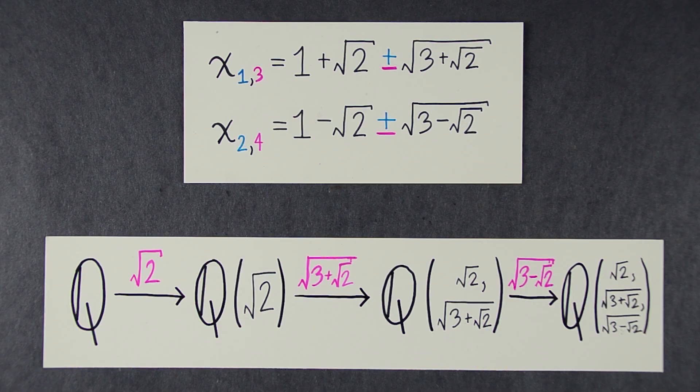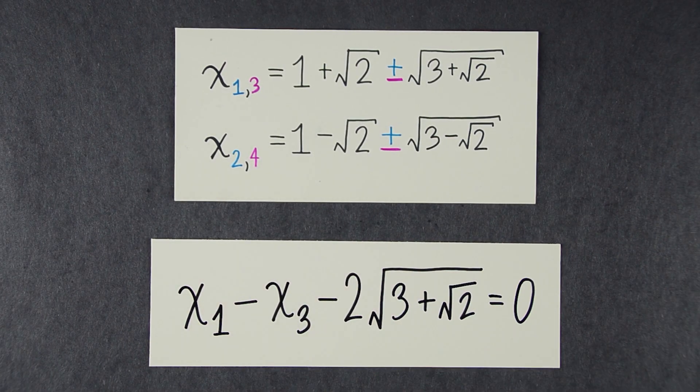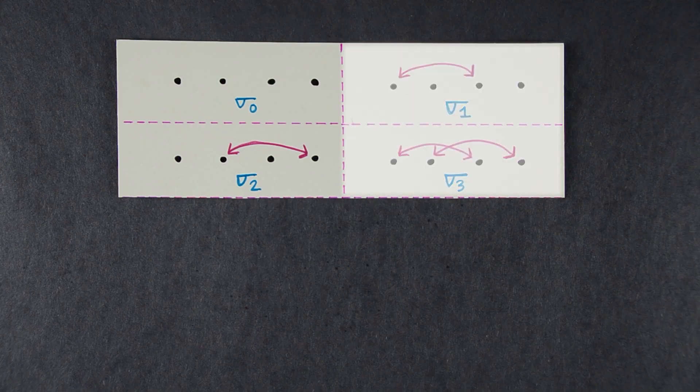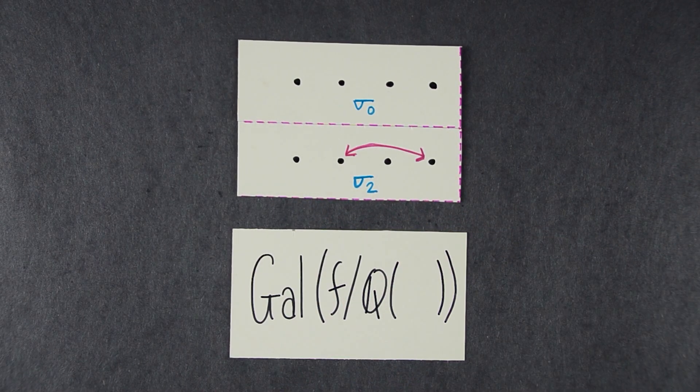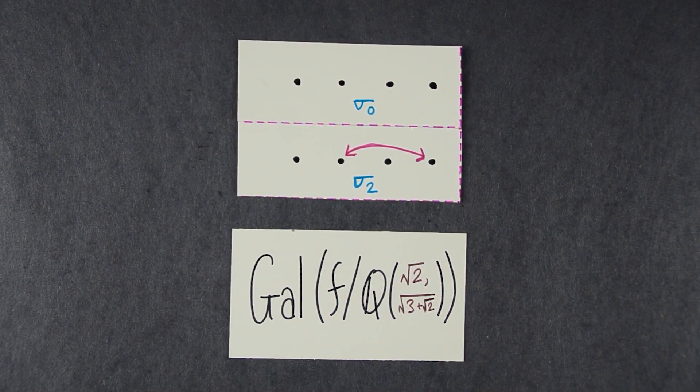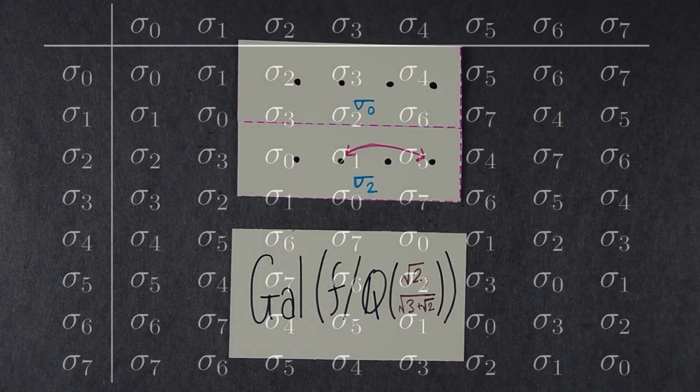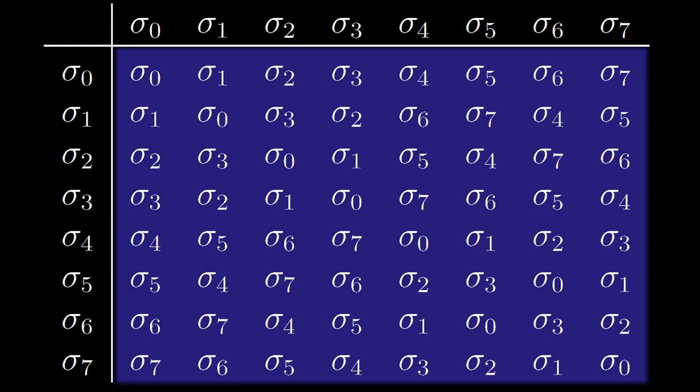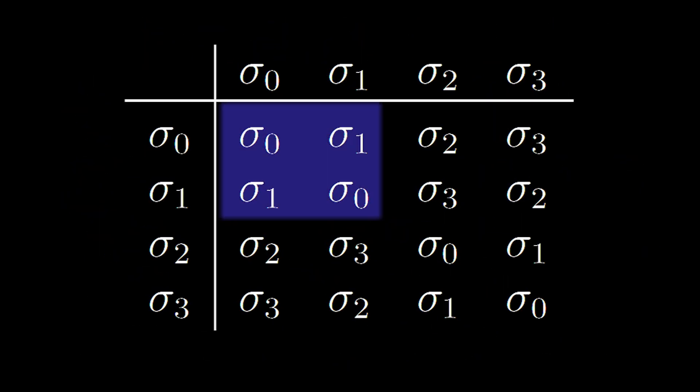Now let's adjoin another number, the square root of 3 plus root 2. Then we have another equation that the roots must satisfy. Two of our permutations don't preserve this new equation. So the Galois group has shrunk to this. This is called the Galois group of f over the field Q adjoined root 2 and root 3 plus root 2. In the group table, this is the group we started with. This is the group we had in step 2. This is what we have now.